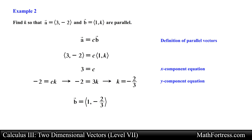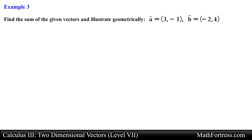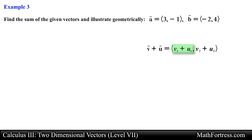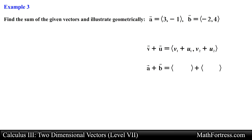Now let's try a couple of examples that make use of vector addition. Find the sum of the given vectors and illustrate geometrically. In this example we are given two distinct vectors: vector A with components 3 and negative 1, and vector B with components negative 2 and 4. We are asked to find the sum of these two vectors algebraically and then illustrate the vector operation geometrically. The procedure to add vectors algebraically requires that we take each of the vectors' x and y components and add them together to obtain the components of the resulting vector.